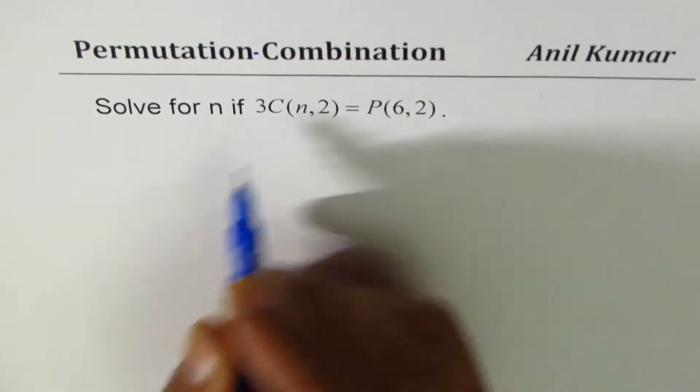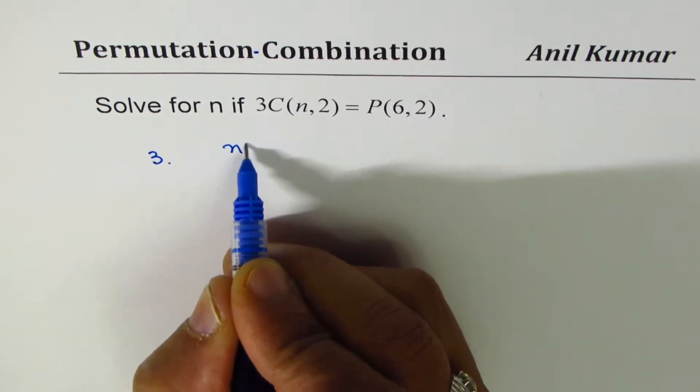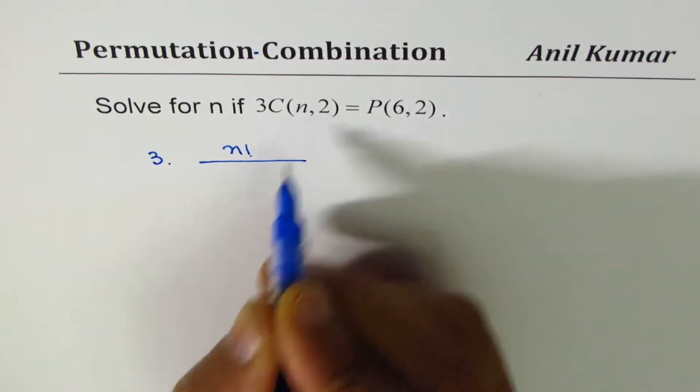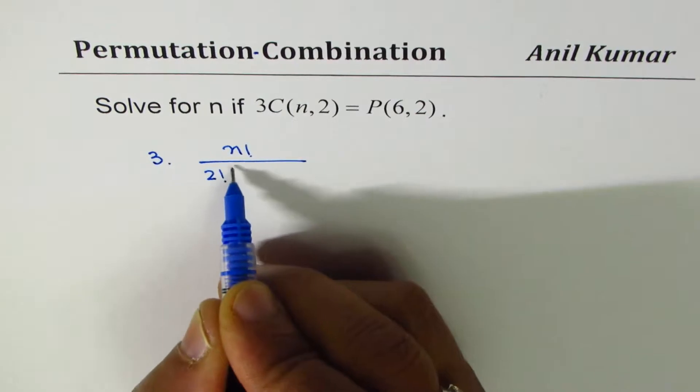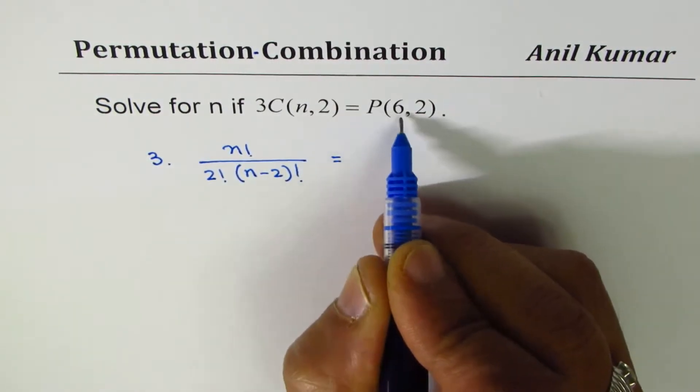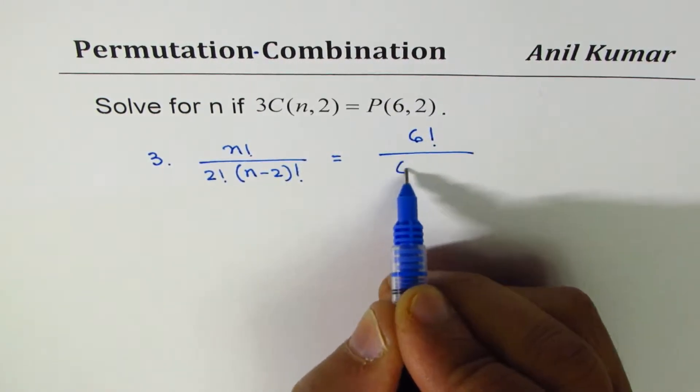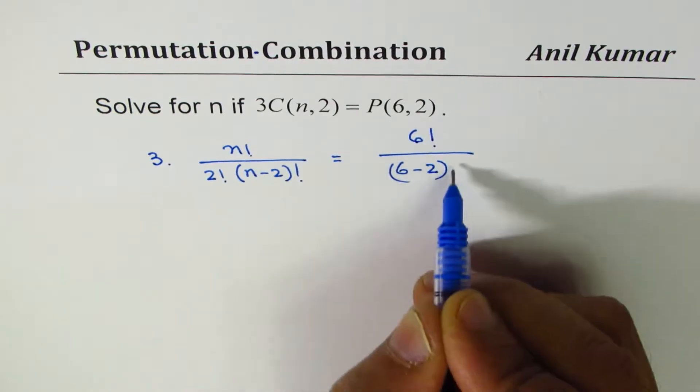3C(n,2) means n factorial divided by 2 factorial times (n-2) factorial, and P(6,2) means 6 factorial divided by (6-2) factorial. So this is the equation which we need to solve.